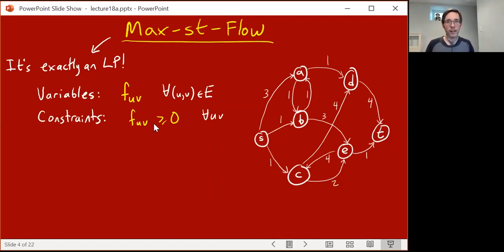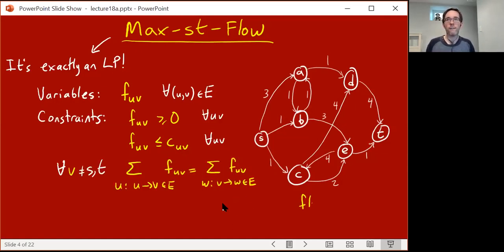Now we have some constraints, and because it's linear programming, these have to be inequality constraints. One constraint we'll have is that these flows are non-negative. You can only ship a non-negative amount of stuff on an edge. The main constraint, the obvious constraint, is called the capacity constraint. This says that the amount of flow you ship along the edge should be at most the capacity. So these c's are not variables, they're fixed numbers that are part of the input to the problem. This is also just an inequality on the variables f.